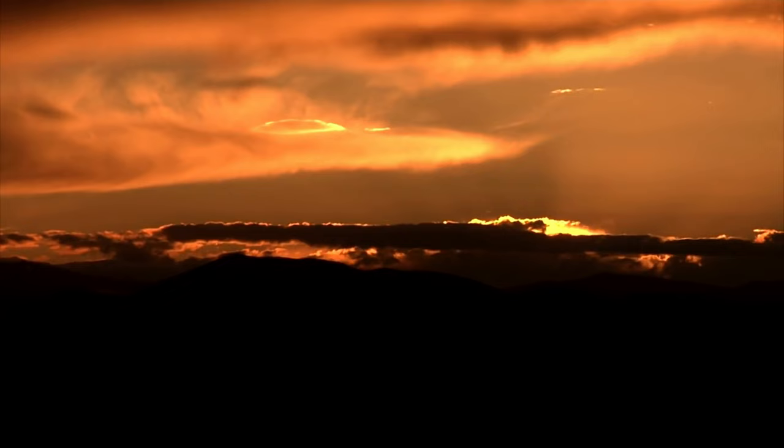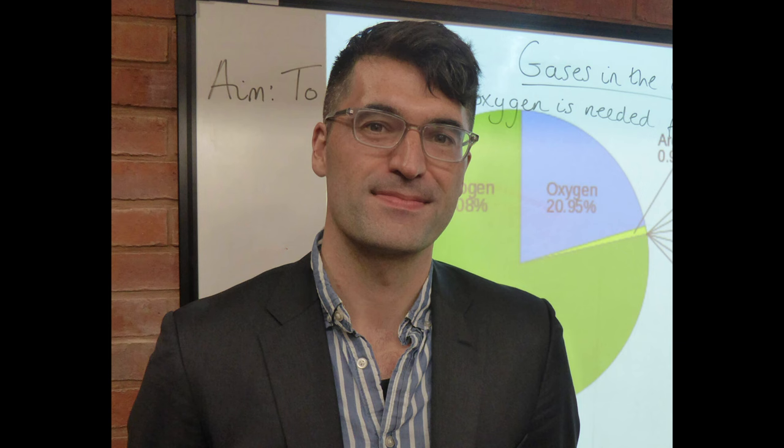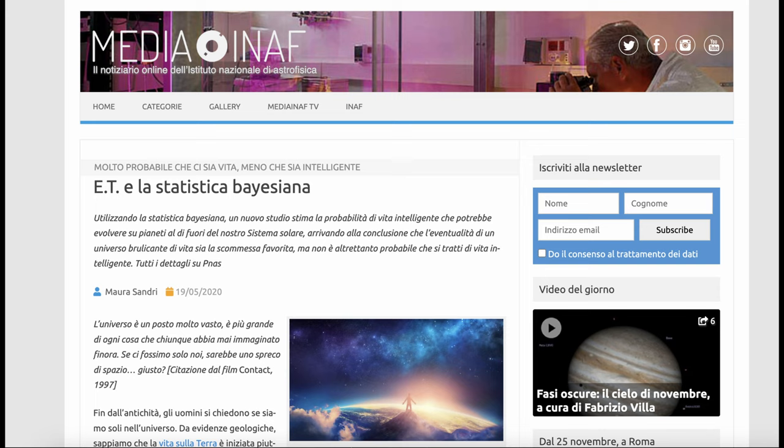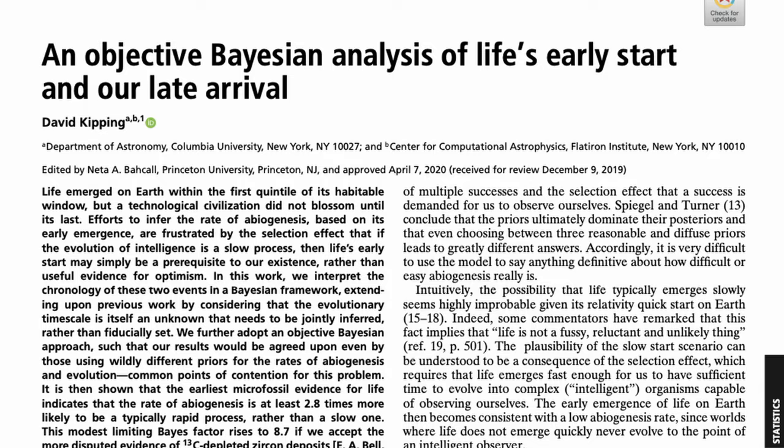Non esiste una risposta definitiva, ma solo ad oggi ipotesi basate su dati scientifici e non solo, modelli matematici e ragionamenti statistici. Tra questi uno dei più recenti e interessanti è quello proposto dallo scienziato David Kipping che ha usato la tecnica matematica dell'inferenza bayesiana per stimare la probabilità di vita e intelligenza su altri pianeti.